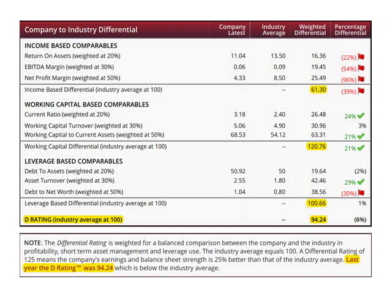Back to the top of page one, each section is totaled and the values of the three components are averaged to arrive at the D rating. D ratings above 100 mean that, on average, the company is operating better than the industry. Scores below 100 mean the company, on average, is operating below the industry for these nine important ratios. It may be important to further study any ratio marked with a red flag.